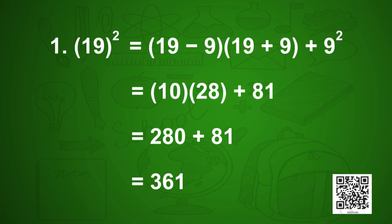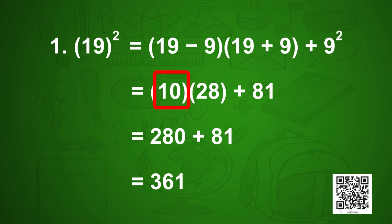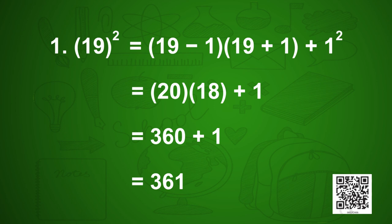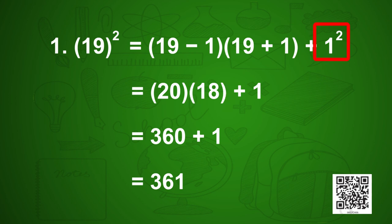Let us find 19². We subtract and add the units digit 9 from 19, getting 10 and 28. So 10 × 28 + 9² = 280 + 81 = 361. Alternatively, we can add and subtract 1 from 19 to get 20 and 18, then compute 20 × 18 + 1² = 360 + 1 = 361.